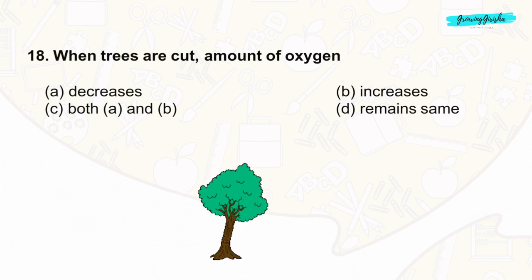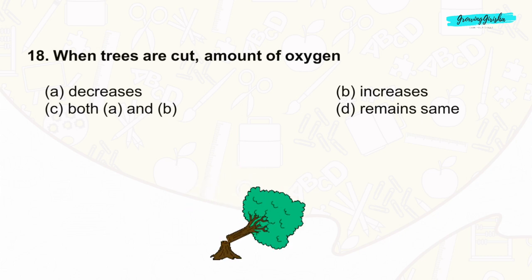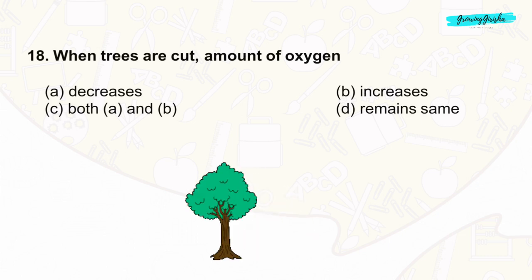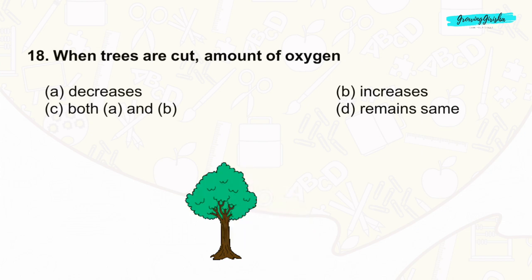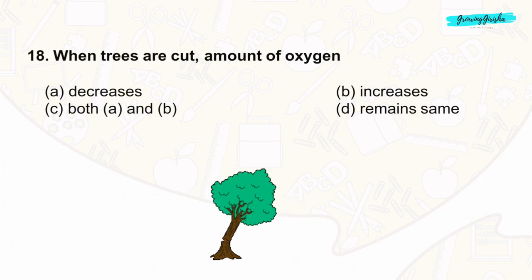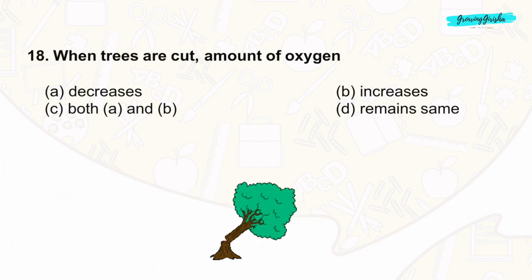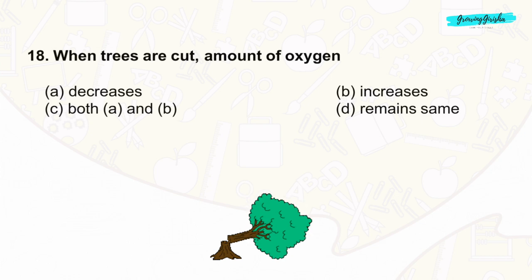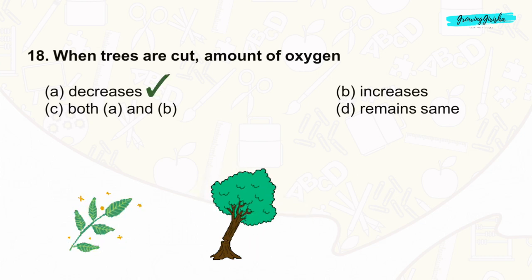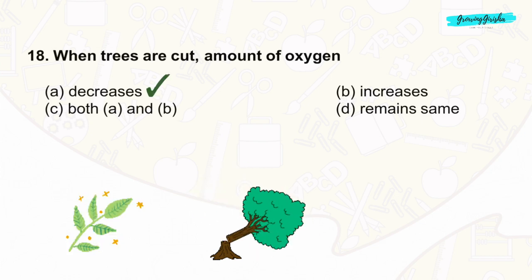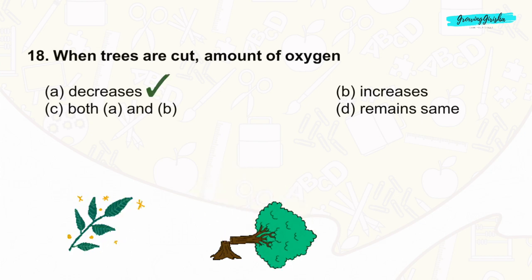Question 18: When trees are cut, less trees produce less oxygen, so the amount of oxygen decreases. The correct answer is option A.